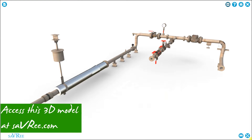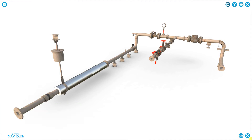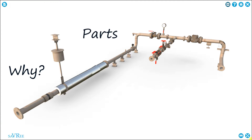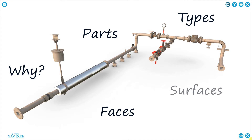In this video, we're going to take a look at flanges. I'll explain why we have flanges, what the different parts of a flange are, we'll look at the different types of flanges, the different faces, and the different surfaces. So let's start with the basics: what is a flange and why do we have them? Why are they essential components in every piping system?